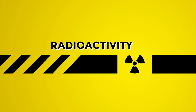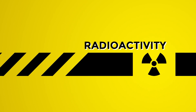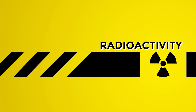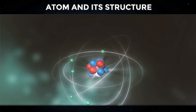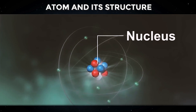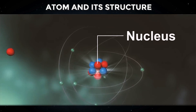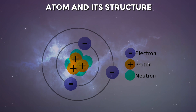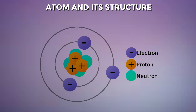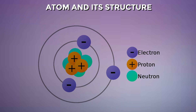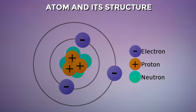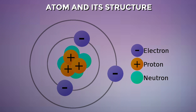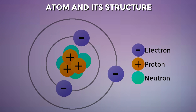To understand radioactivity, we first have to understand what makes everything around us — atoms and their structure. In simple terms, there is a nucleus at the center of each atom, containing neutrons and protons, with electrons revolving around it. In each atom, the number of neutrons, protons, and electrons is different, which makes each element unique.